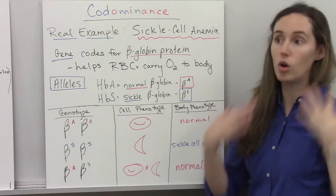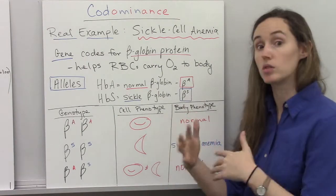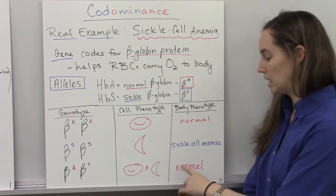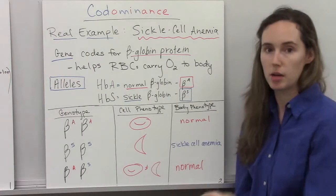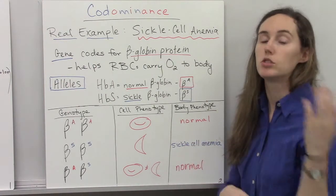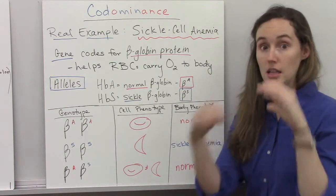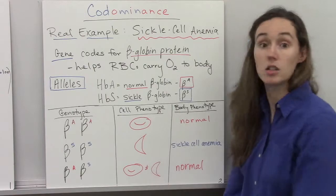But when you're looking at the overall body phenotype, as far as symptoms of sickle cell that are shown, it's the normal phenotype that shows up. That's why some people say that normal is dominant to having sickle cell. In the big picture that's true, in the little cellular picture, it's actually co-dominant.